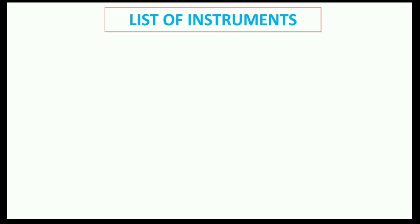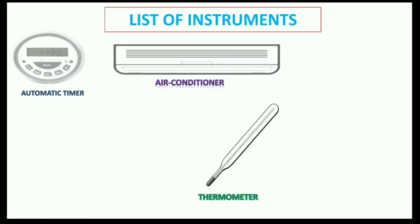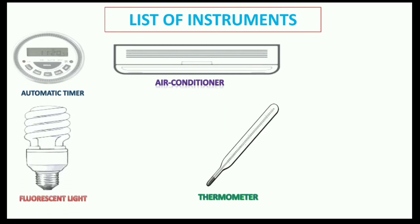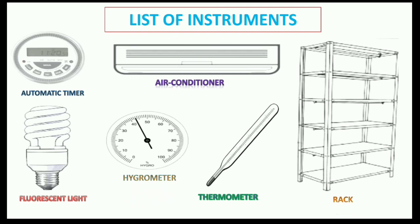The instruments required in the culture room include: a thermometer to measure temperature; an air conditioner to maintain the temperature; an automatic timer to maintain the time duration of light; fluorescent lights; and a hygrometer to measure humidity. Racks are also required to keep the culture vessels where the cultures are grown into plantlets. These are the basic facilities required in a plant tissue culture laboratory.